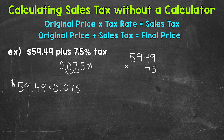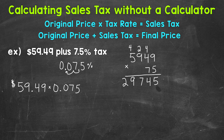Let's do 5949 times 0.075, and we will worry about the decimal at the end. 5 times 9 is 45. 5 times 4 is 20, plus 4 is 24. 5 times 9 is 45, plus 2 is 47. And then 5 times 5 is 25, plus 4 is 29. So we are done with the 5, the 4, the 2, and the 4.